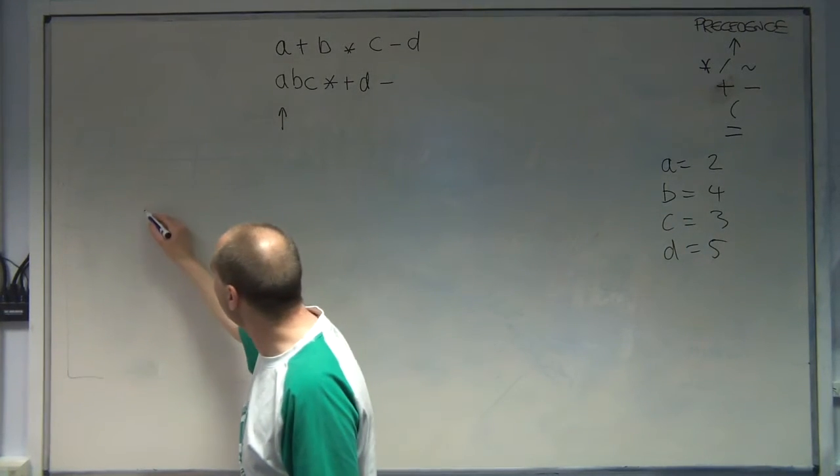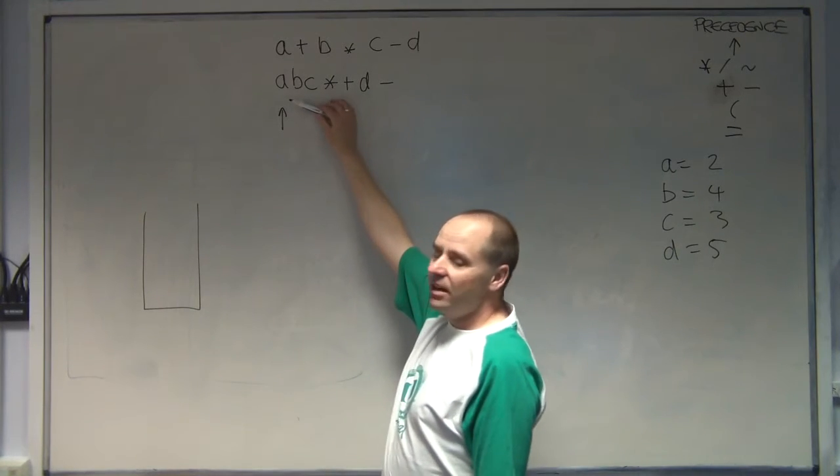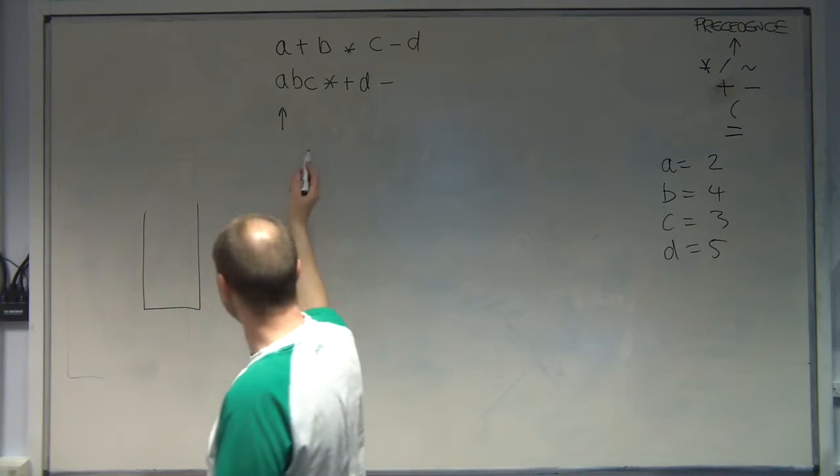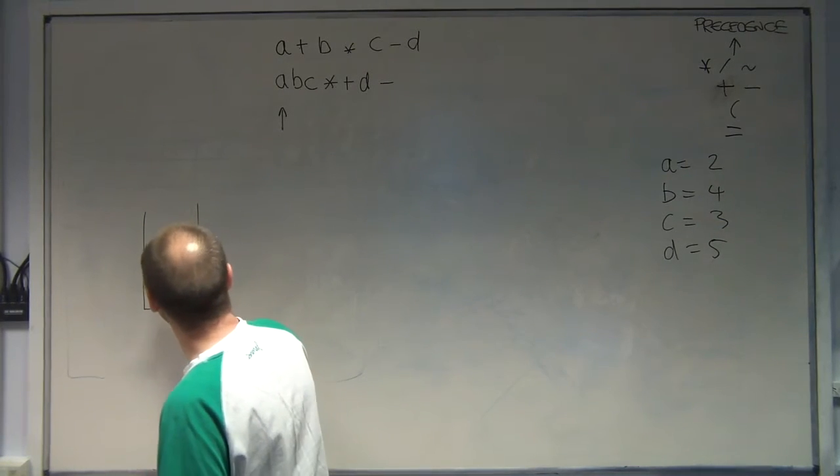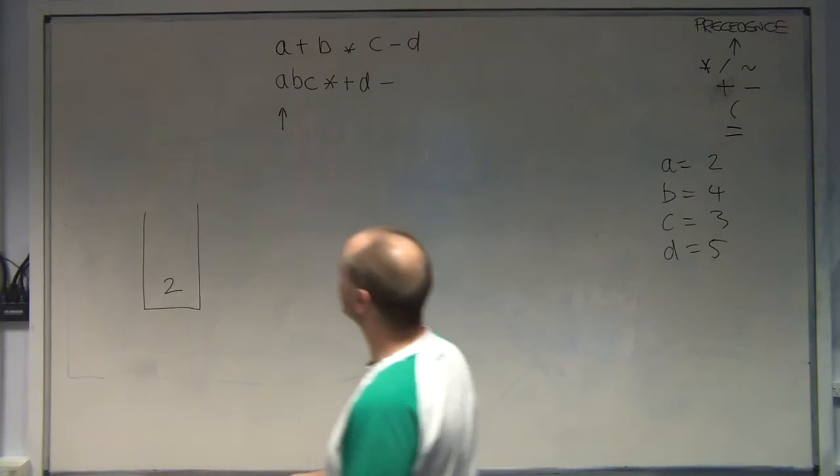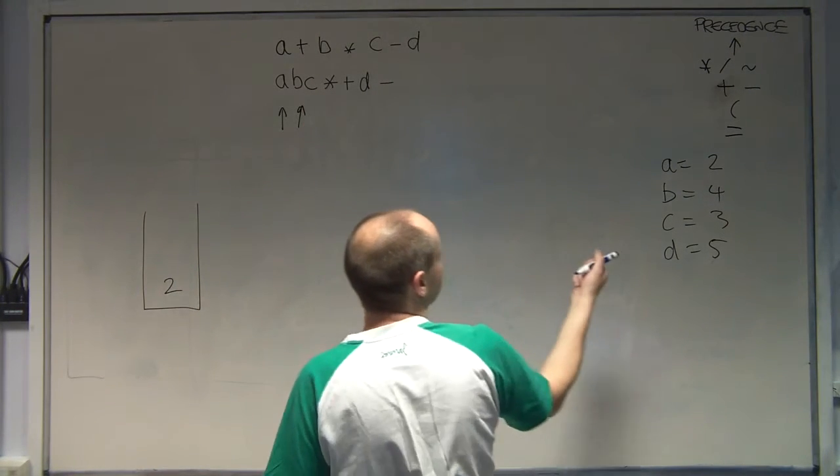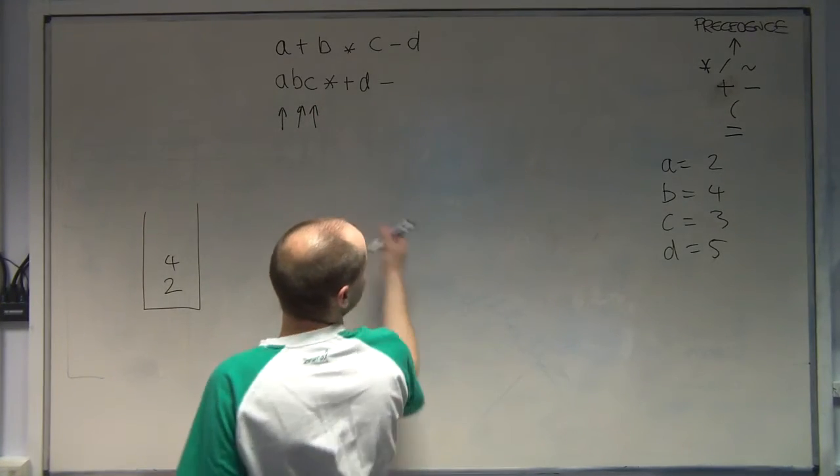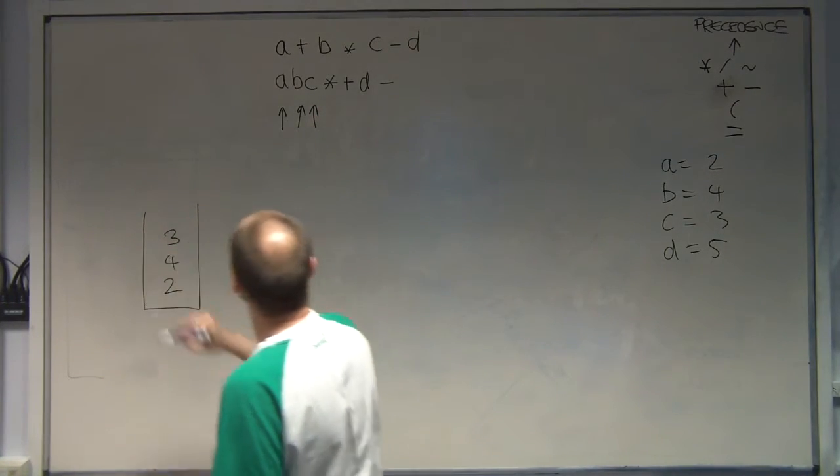Okay, so we're going to build a stack. So every time we get an operand, we put it on the stack. So I'm going to copy the numbers over each time I do it. So 2 goes on the stack, B, which I'd set as 4, 4 goes on the stack, C, which is 3, 3 goes on the stack.